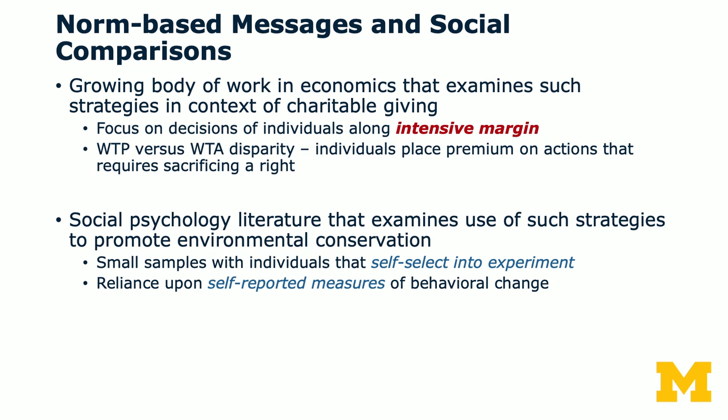In this study, the authors use norm-based messages and social comparisons. Remember in the first week, we looked at social comparisons in reducing traffic accidents. There's a growing body of work in economics and psychology that examines such strategies in the context of charitable giving, focusing on decisions of individuals along the intensive margin, often comparing willingness to pay versus willingness to accept disparities. Social psychology literature also examined the use of norm-based strategies to promote environmental conservation, typically with small samples with individuals who are self-selected into the experiment — in other words, they recruit volunteers.